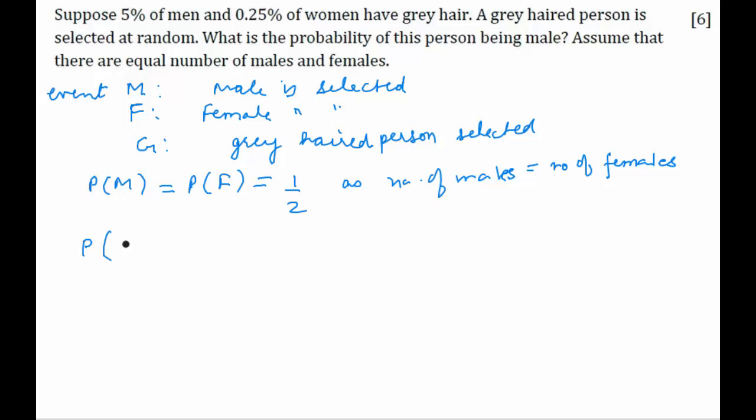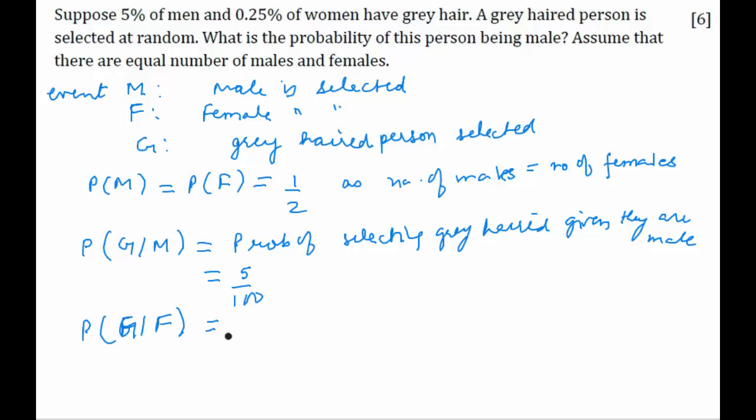So P of G given M, that means the probability of selecting a grey haired person given that he was a male. So this is going to be 5%, so 5 by 100. And similarly probability of G given F, this is going to be 0.25%, so 0.25 by 100.